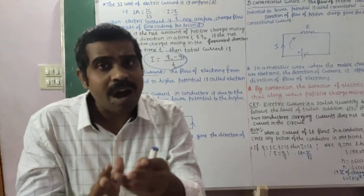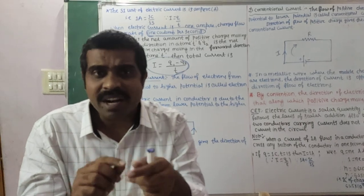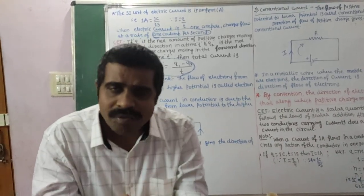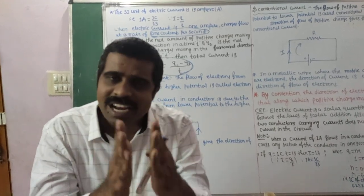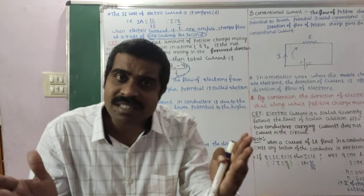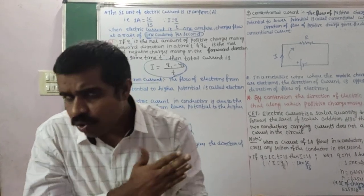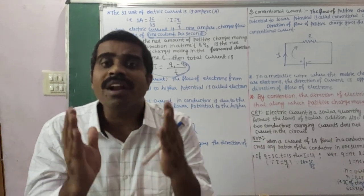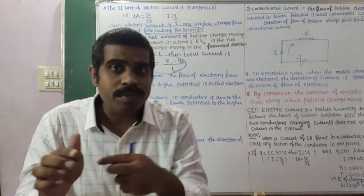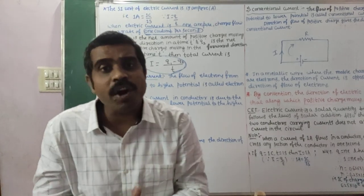Our nerve signals are in the order of microamps. That is why we get sensations very quickly. A healthy person reacts immediately to any heating sensation because nerve signals operate at microamp levels. Lightning carries thousands of amperes. Daily life appliances like refrigerators, mixers, and pump sets use current in the order of amperes. Milli means 10 to the power of minus 3 ampere; micro means 10 to the power of minus 6 ampere.